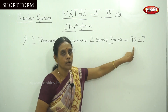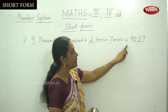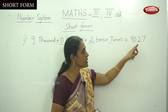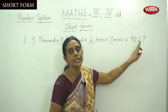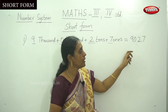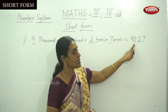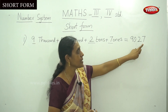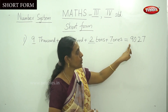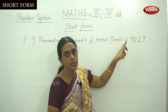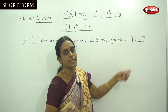This is the short form. Now can you read this number? That is nine thousand twenty seven. Because the hundred place has no number. That is ones, tens, hundred, thousand. So simply, nine thousand twenty seven.